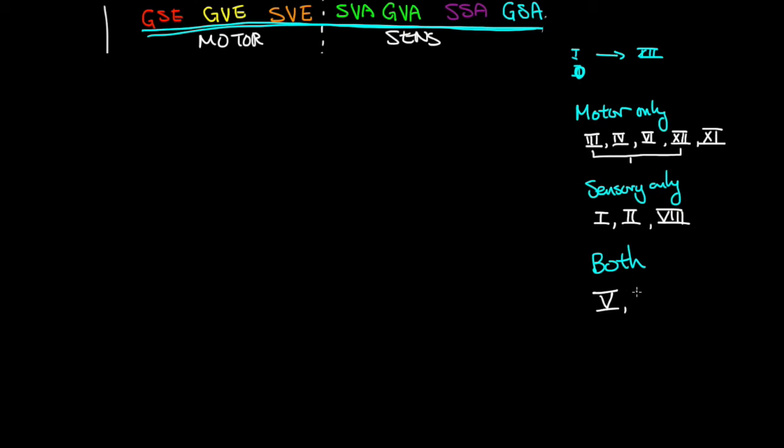And then what you've got left are the ones that do both. So 5 trigeminal, you've got 7 which is facial, you've got 9 glossopharyngeal, and then 10 vagus. Let's just check: 1, 2, 3, 4, 5, 6, 7, 8, 9, 10, 11, 12. Great, so that's all the 12 cranial nerves.